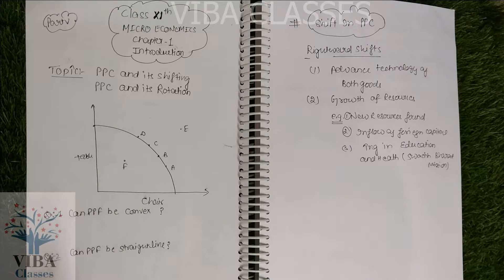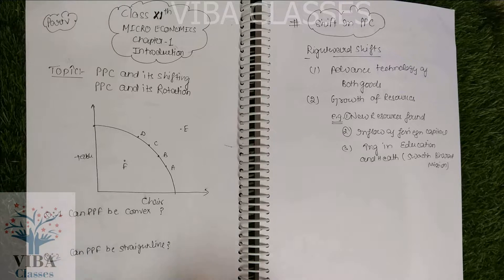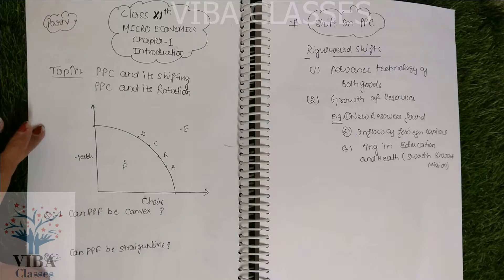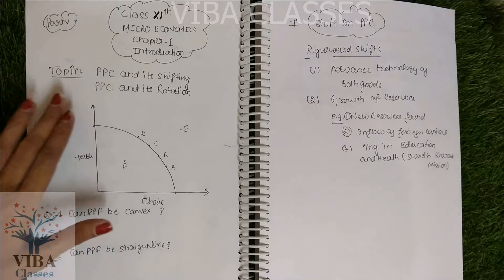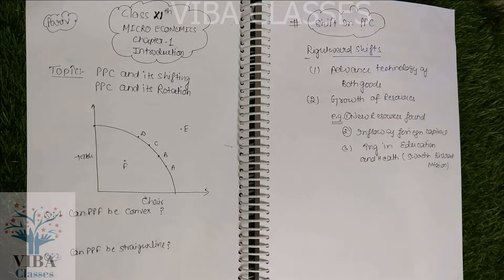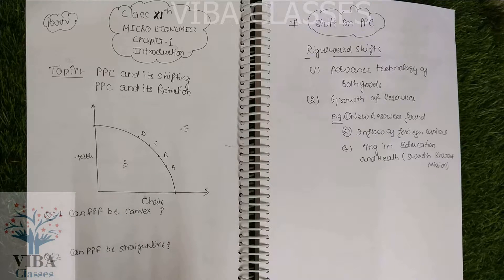In the previous video, we told you what is the PPC curve — what is the production possibility curve. We will recap a few things about this, then we will tell you about shifting and rotation, and explain different situations where you will determine whether the PPC curve will shift or rotate.